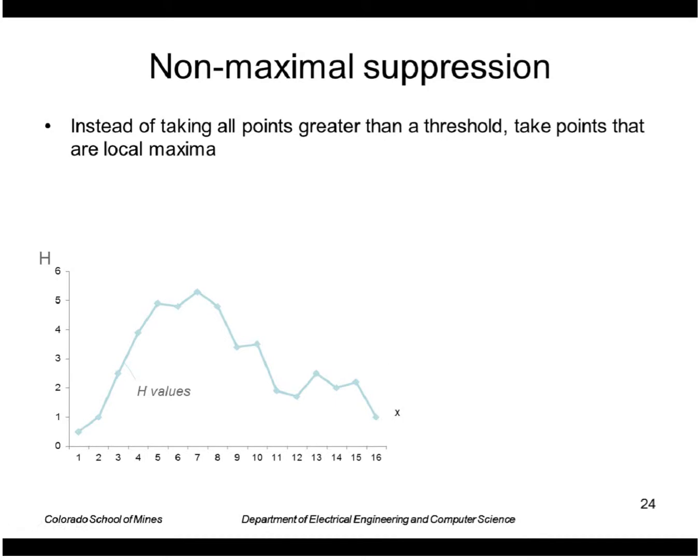So let's do non-maximal suppression to get rid of those extra lines. Instead of taking all the points greater than the threshold, we'll take points that are local maxima.